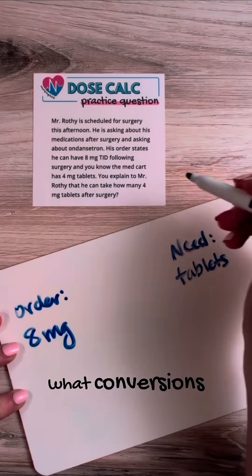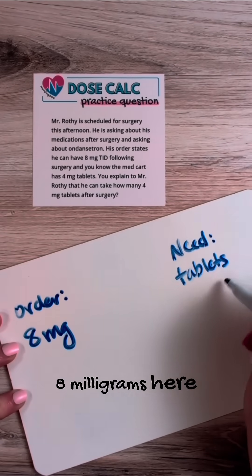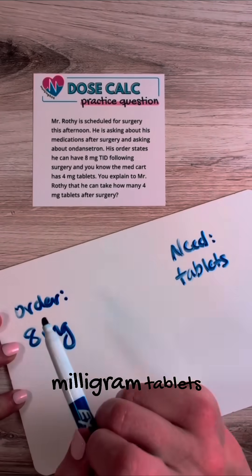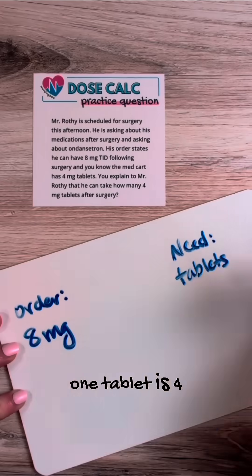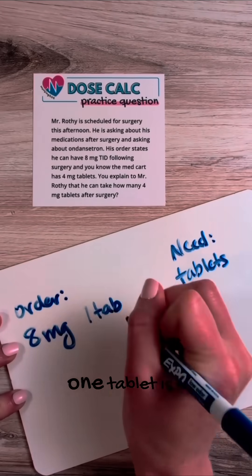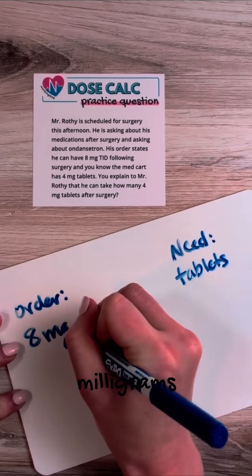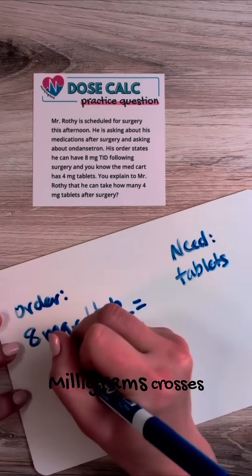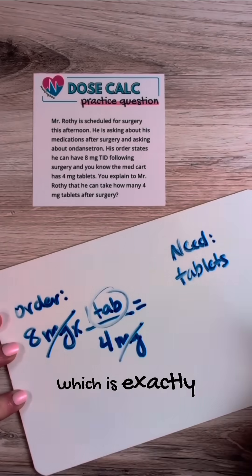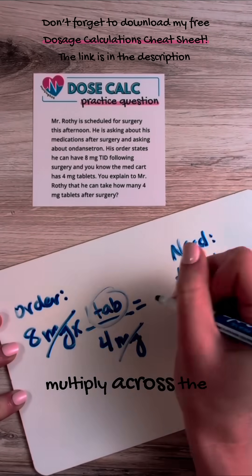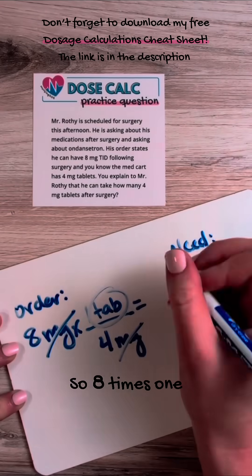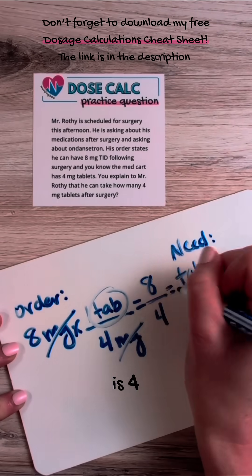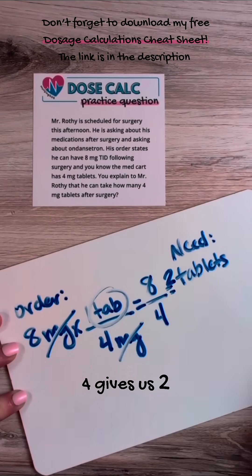The third step is: what conversions do we need to get from eight milligrams to tablets? The question itself tells us — what we have in the MedCart is four milligram tablets, so one tablet is four milligrams. We have eight milligrams on top and four milligrams on the bottom; milligrams cancel out and we're left only with tablets, which is exactly what we want. Multiply across the top, multiply across the bottom, and divide: eight times one is eight, four times one is four, and eight divided by four gives us two tablets.